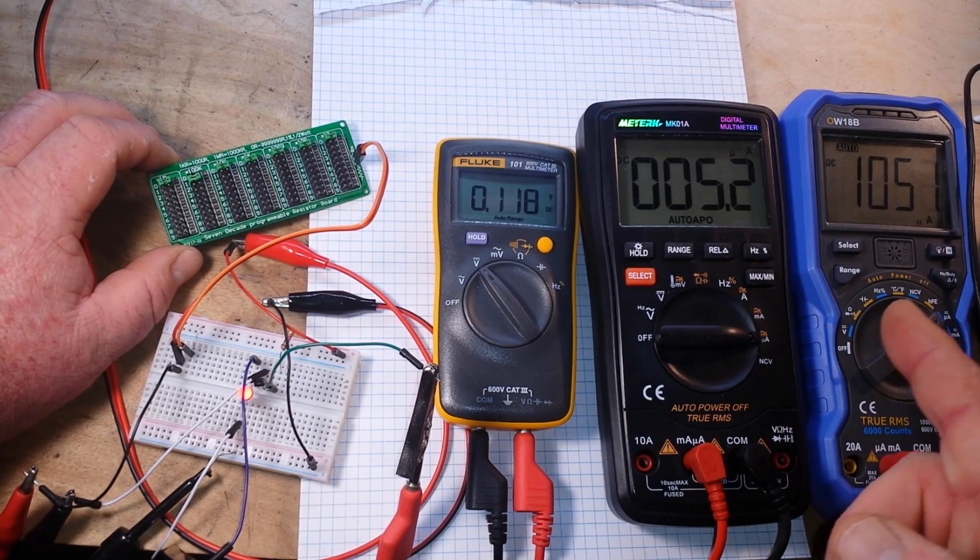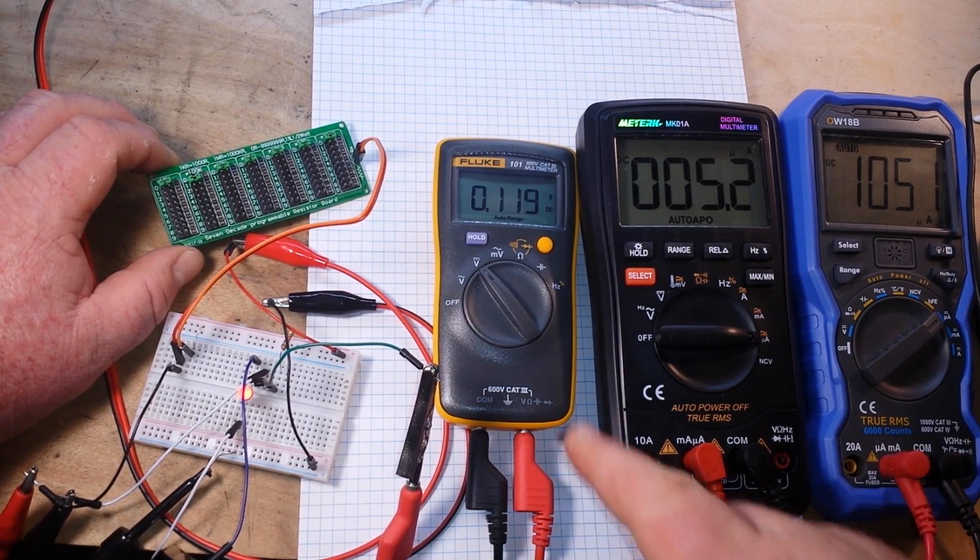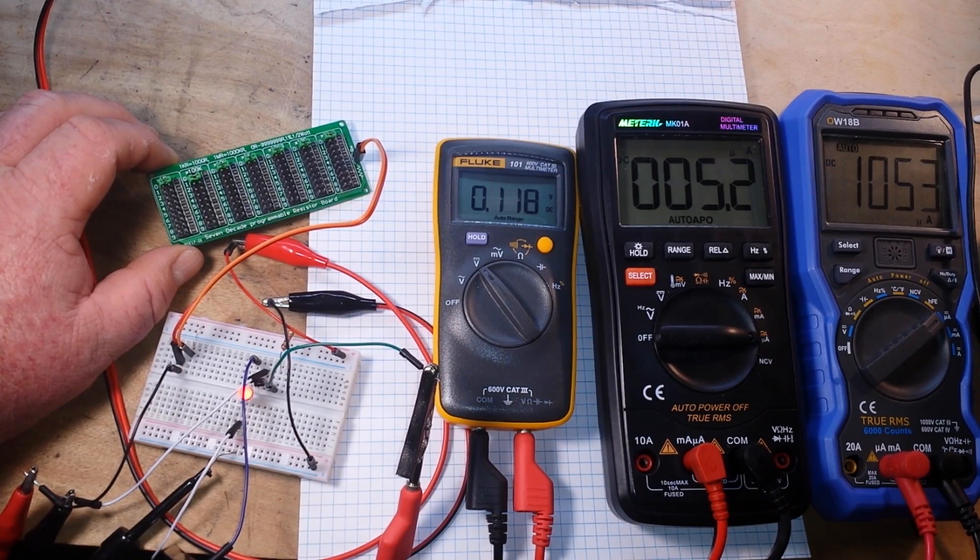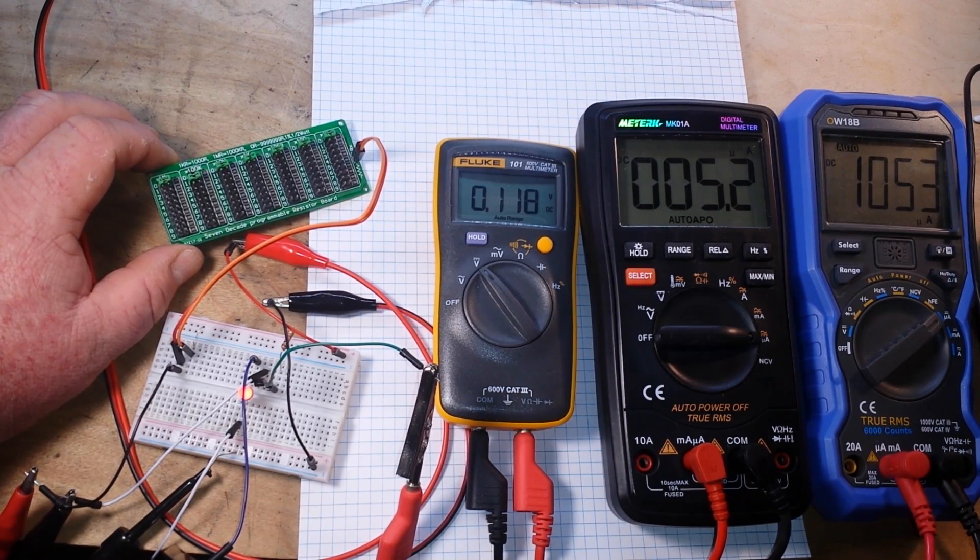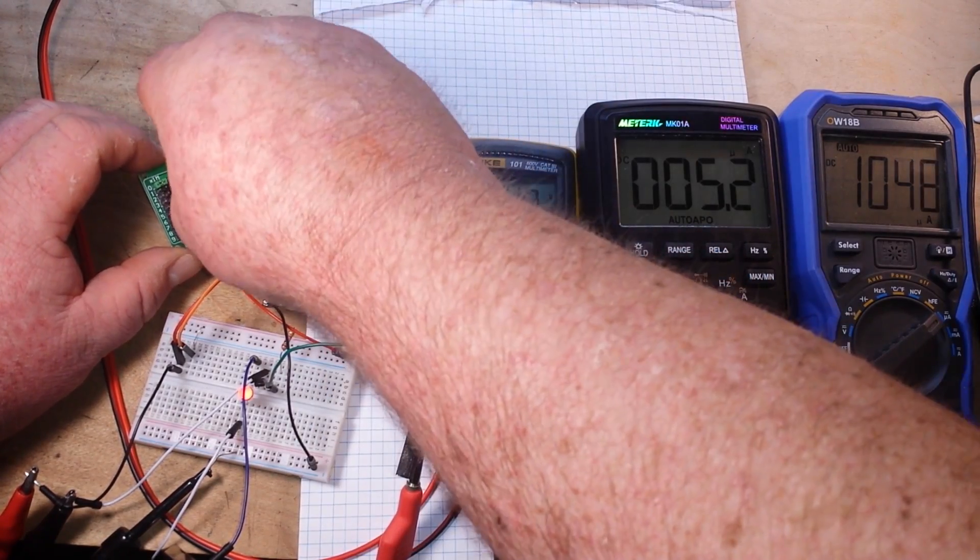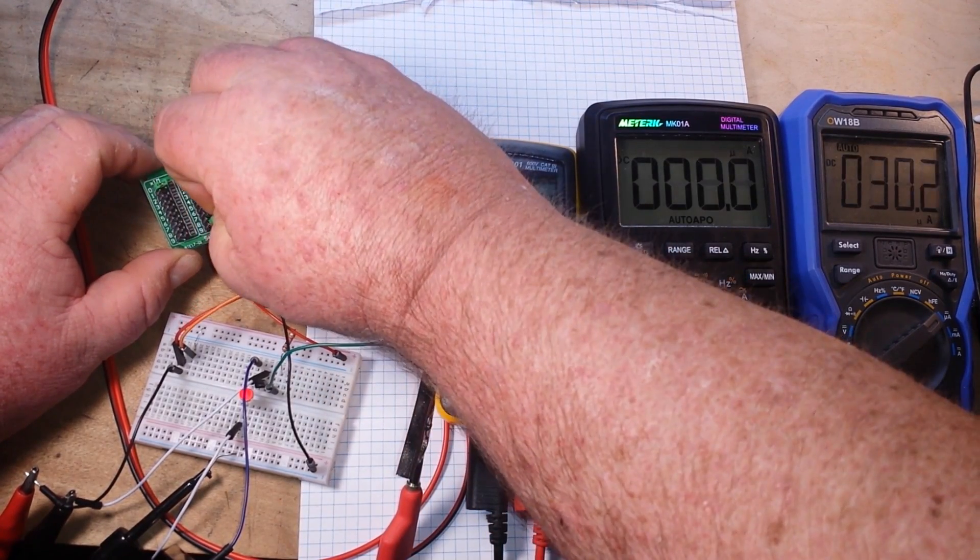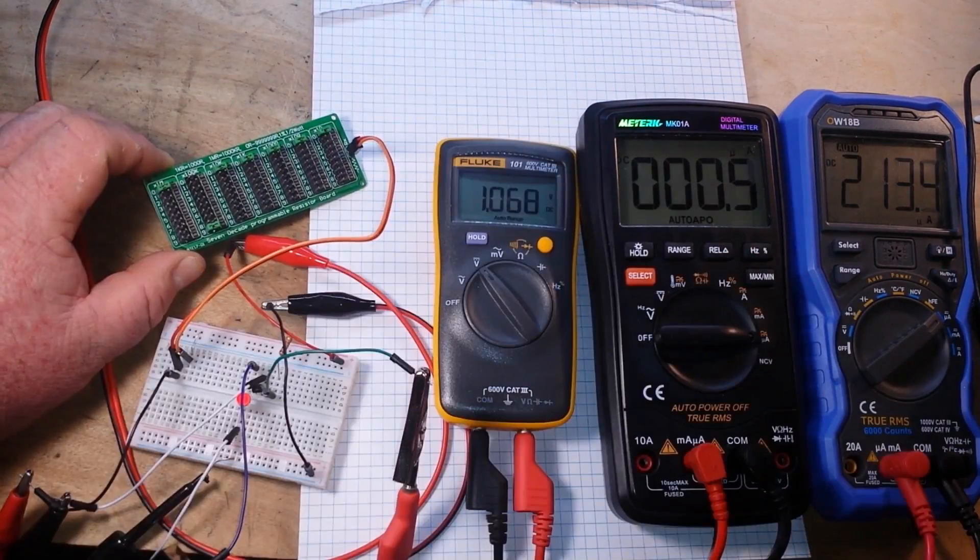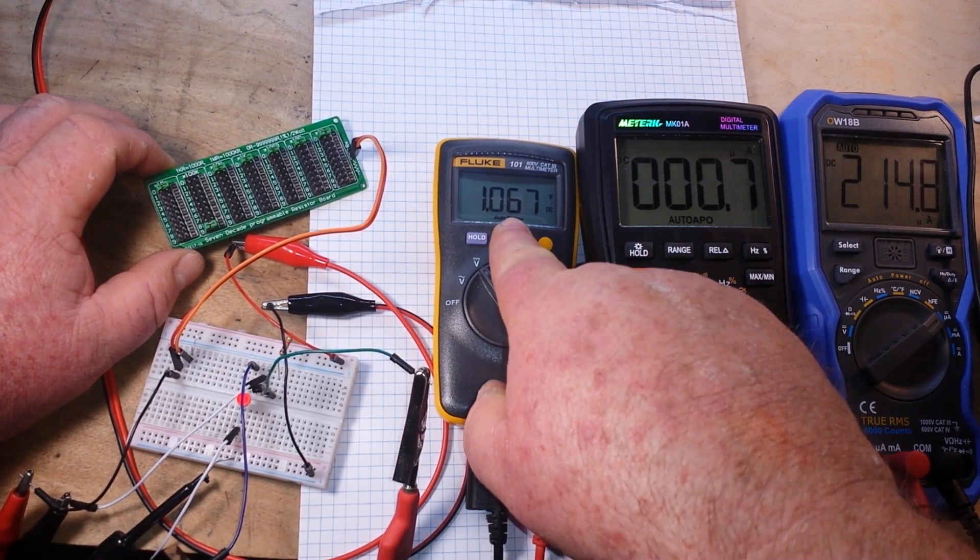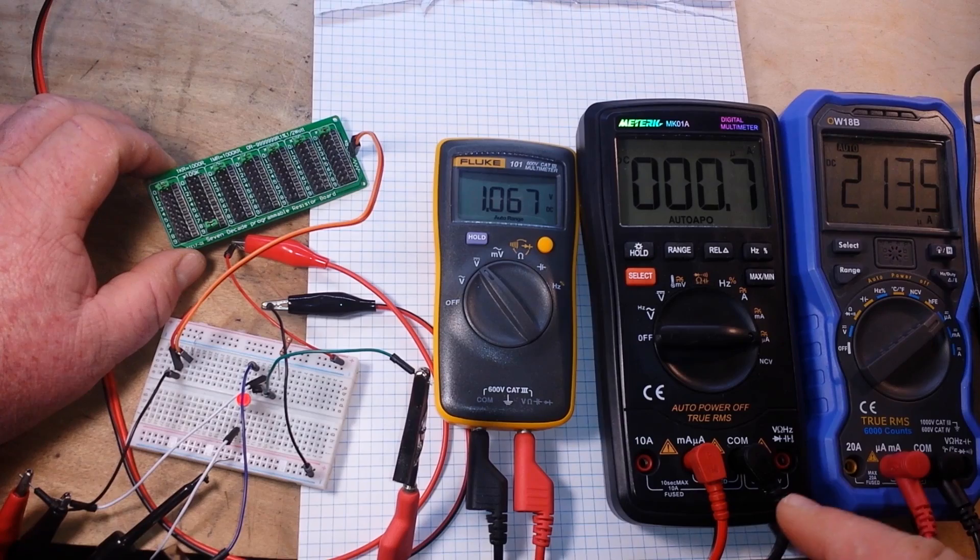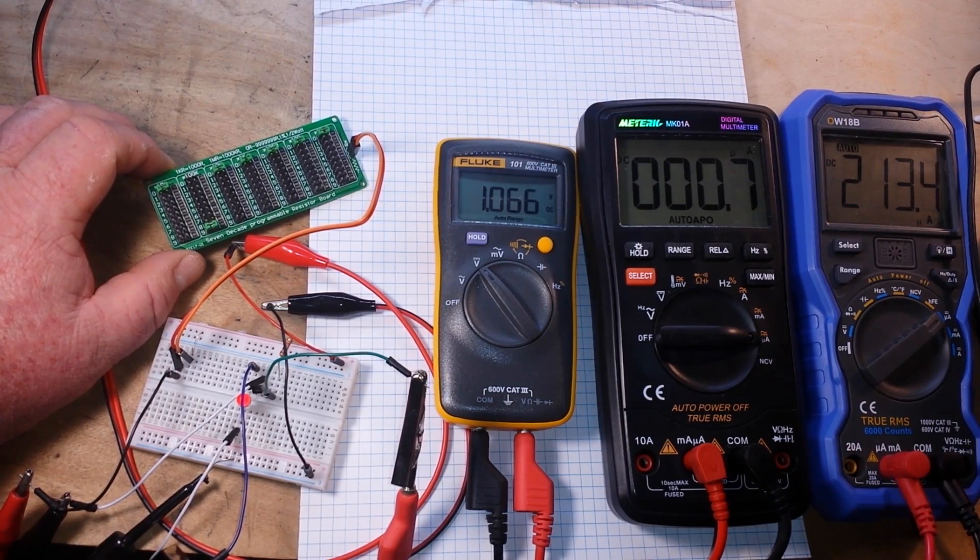We have 0.119 collector-emitter voltage. Now let's take that off, let's go all the way up to 900k. You can see our collector-emitter voltage at 1 volt, 0.7 microamps in to 13.5 out.